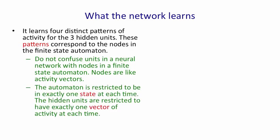The automaton is restricted to be in exactly one state at each time, and similarly, the hidden units are restricted to have exactly one activity vector at each time in the recurrent neural network.